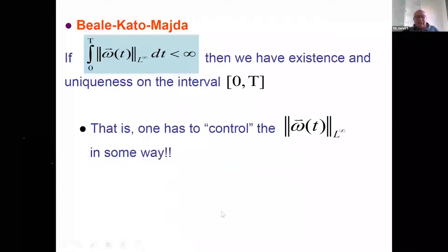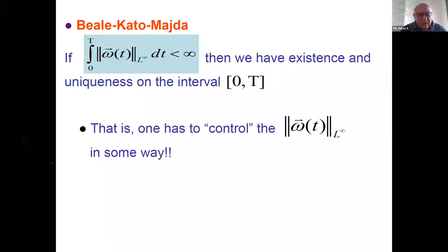Similar to Prodi-Serrin for Navier-Stokes, there is the Beale-Kato-Majda criterion for Euler: if the L^∞ norm of the vorticity ω is under control, then the Euler equation is under control. Many results follow this paradigm for different equations. I should note for historical clarity that Beale-Kato-Majda was for Euler — the inviscid case — while criteria for dissipative systems typically follow the Prodi-Serrin lines rather than Beale-Kato-Majda.